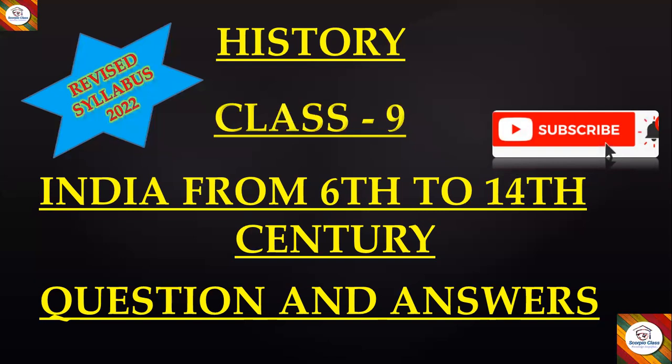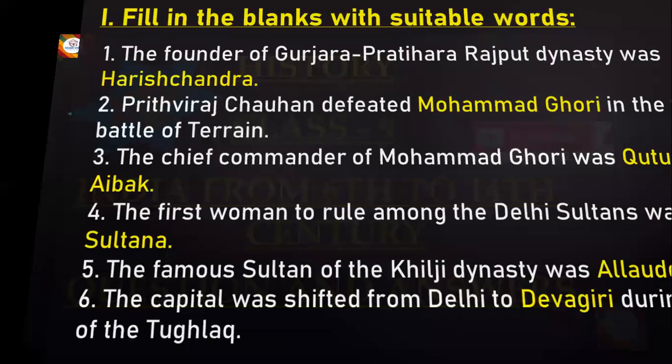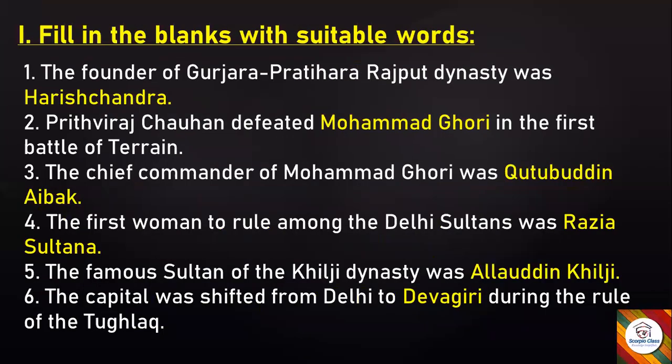Now let's get started without any further delay with our notes. We have first: Fill in the Blanks with suitable words. First: The founder of the Gurjara-Pratihara Rajput dynasty was — Harishchandra. Second: Prithviraj Chauhan defeated — in the First Battle of Tarain. Muhammad Gori.